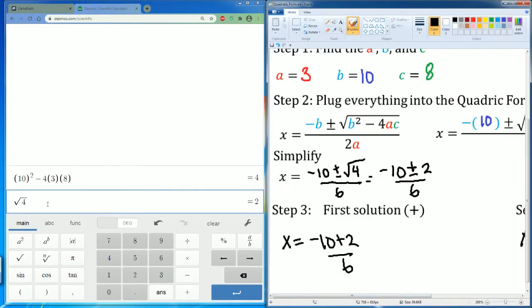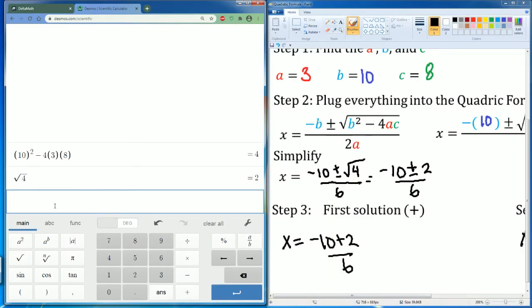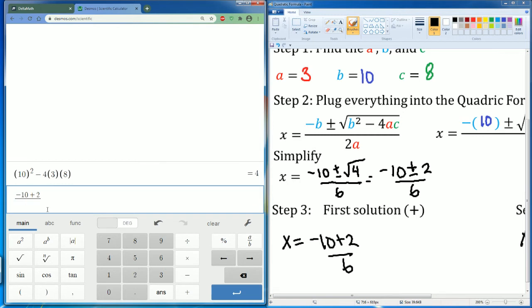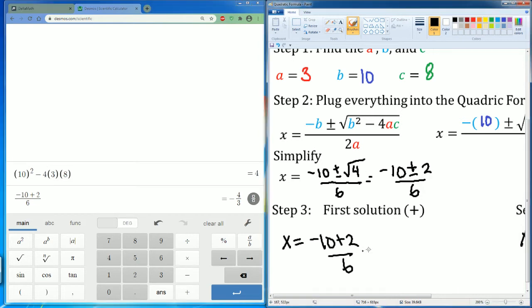And again, I'm going to use Desmos. So the first one, it's negative 10 plus 2 and this is going to be divided by 6. And I saw that in fraction form. Hit this to convert it into fraction form. It's going to be equal to negative 4 over 3.